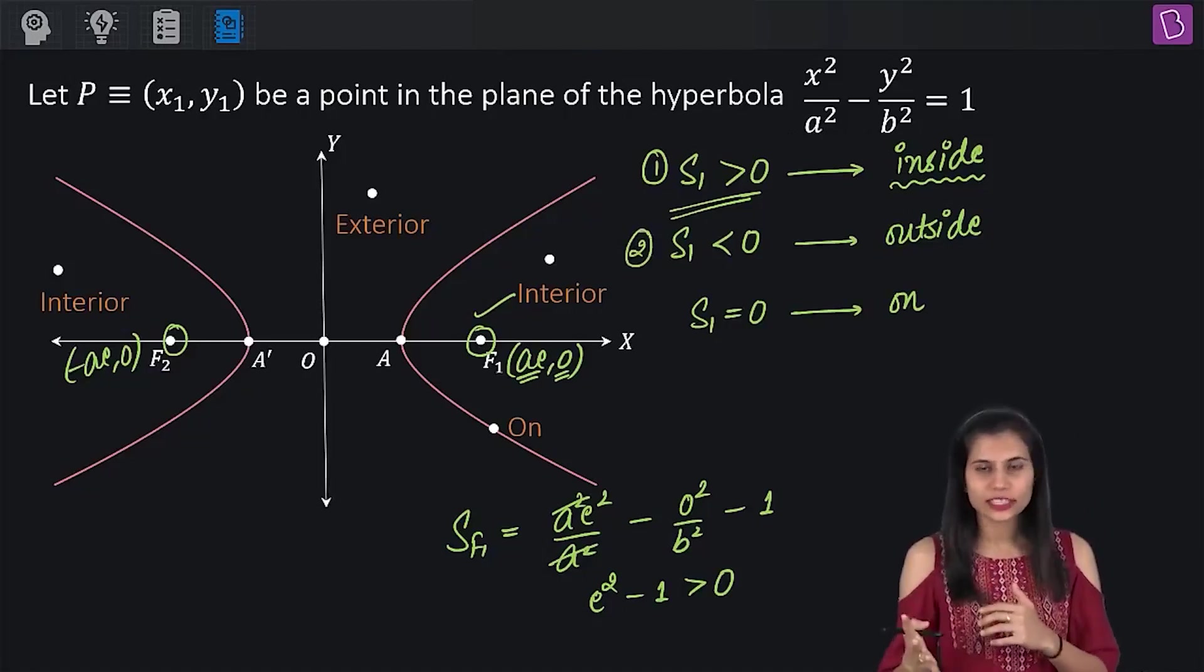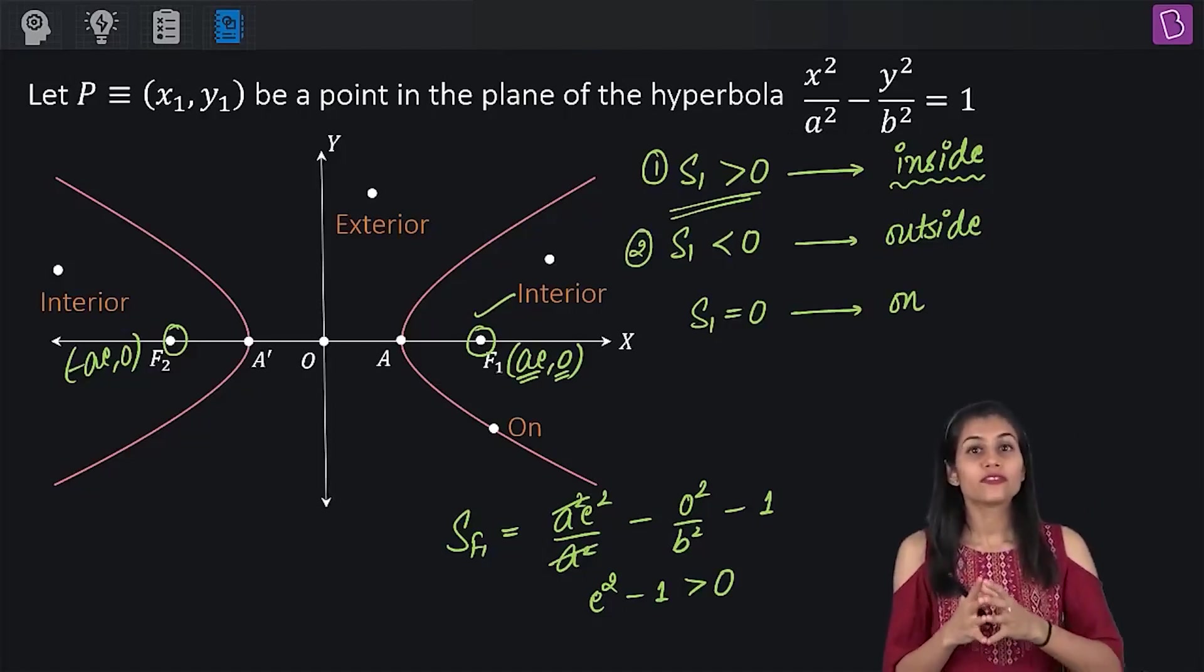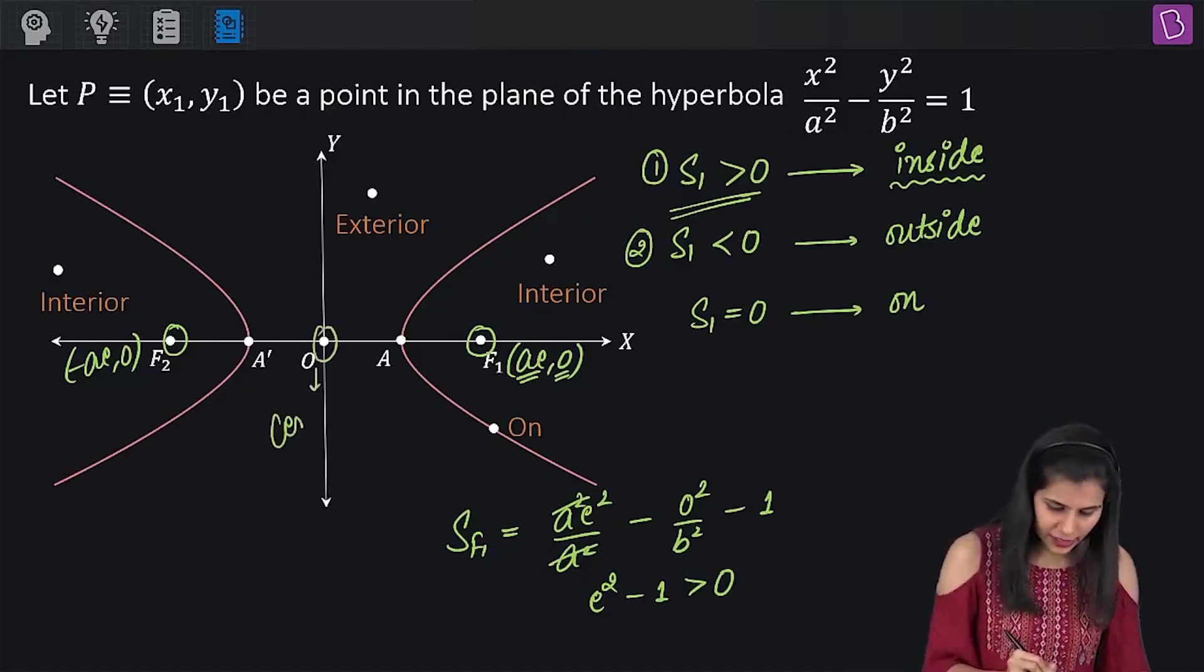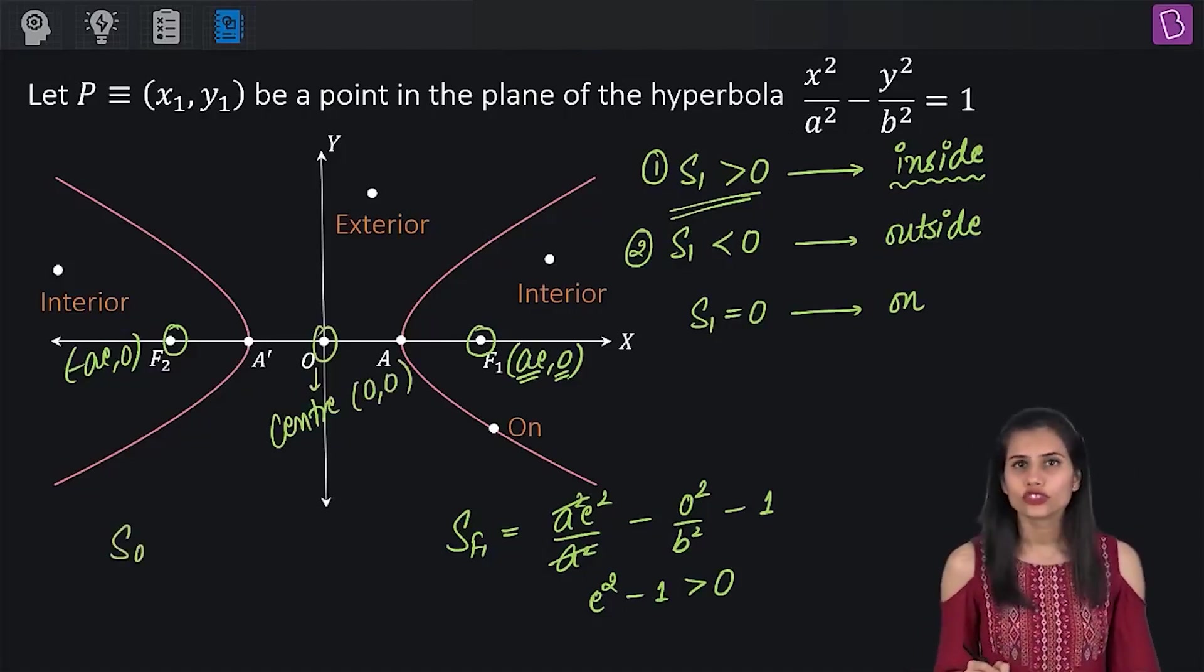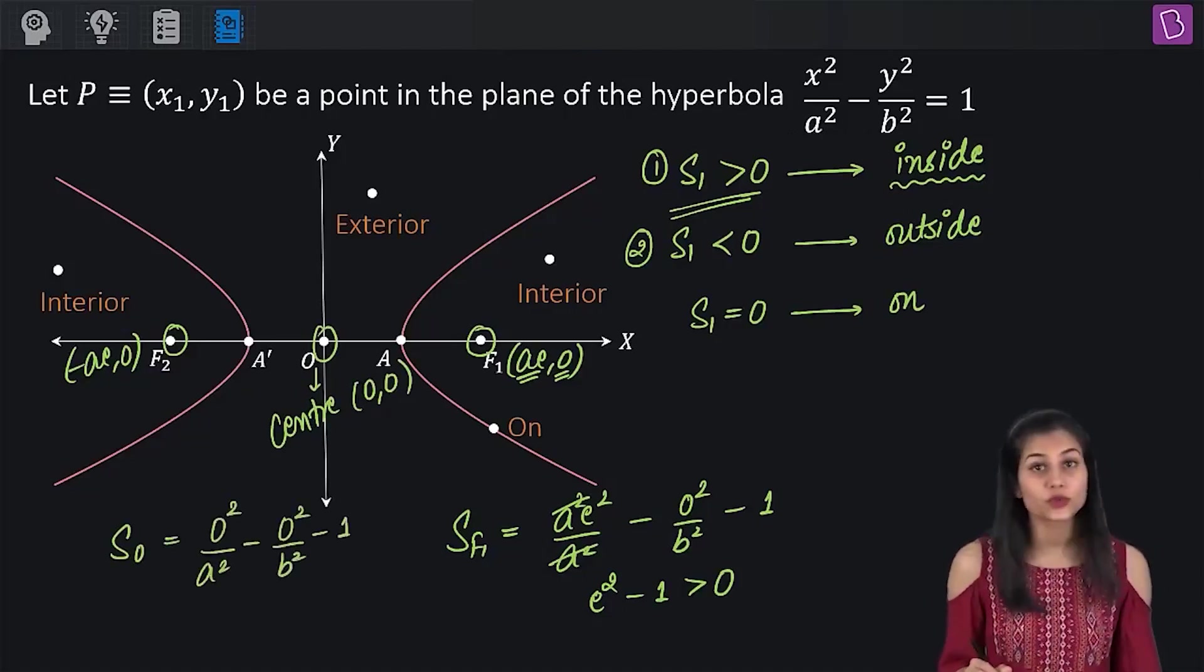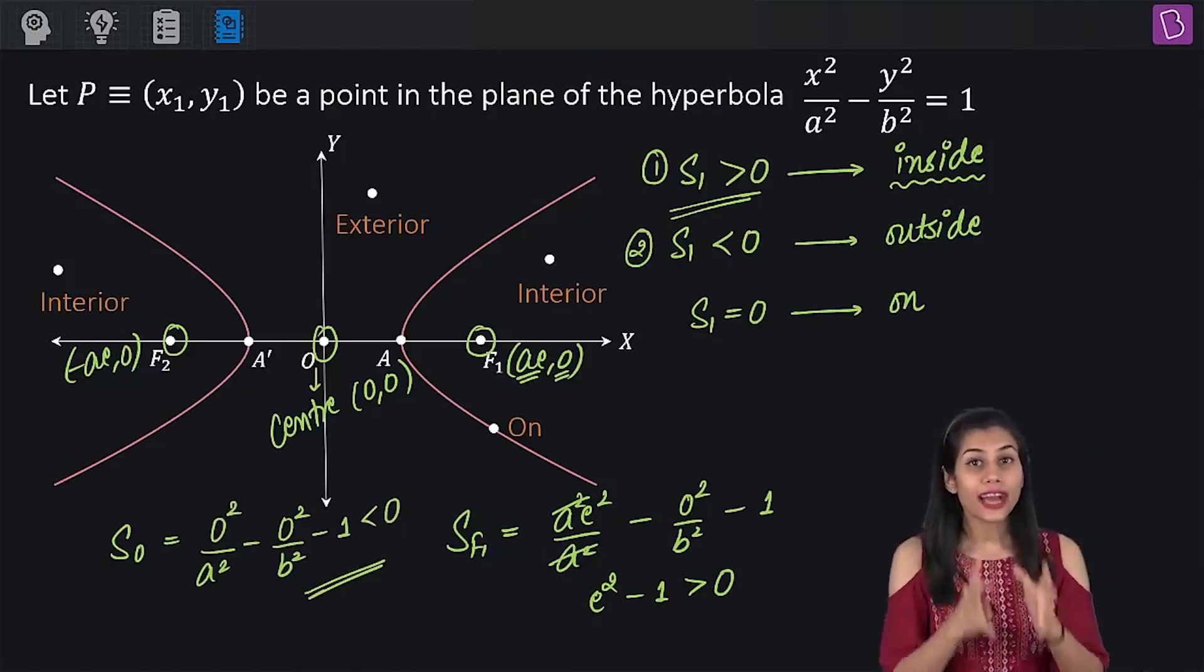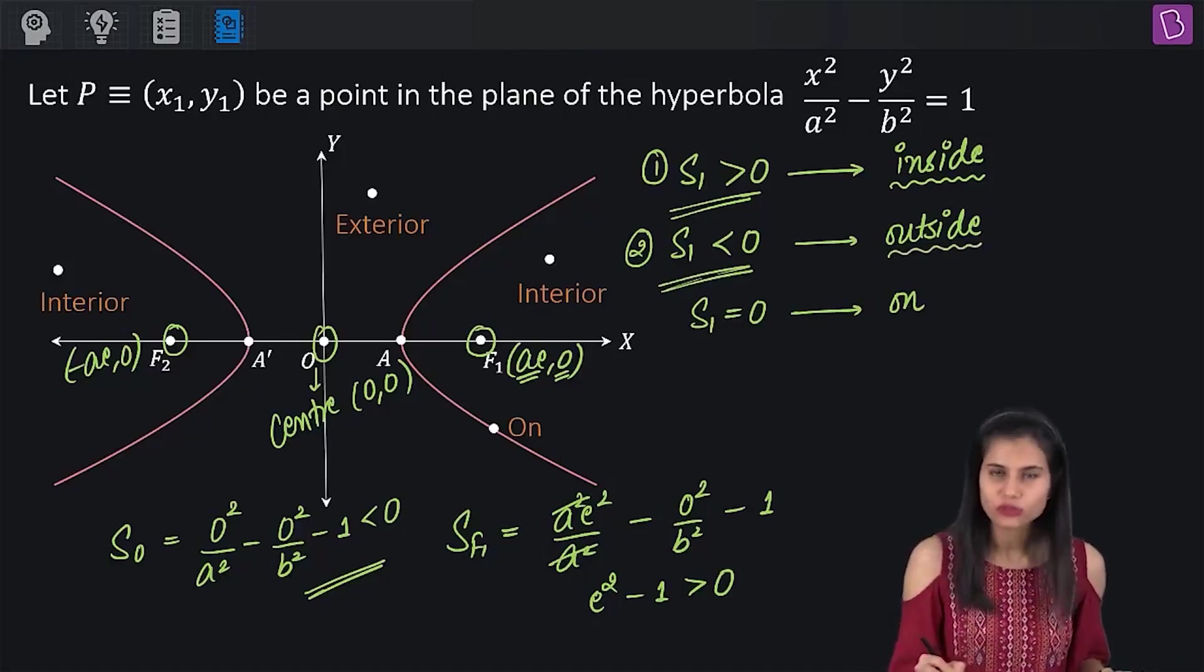Similarly, if you want to justify that S1 less than 0 is giving you outside region, for that, what you will do is, you will certainly want to show that the value of S at any exterior point is negative. For that, just catch hold of the very evidently visible exterior point which is your center having coordinates 0, 0. Now, find the value of S at origin which is your center, it will come out to be 0 square by a square minus 0 square by b square minus 1 which obviously as expected is negative. Because the value of S at an exterior point is coming out to be negative, you can definitely conclude that the value of S at any exterior point will be negative and hence, S1 less than 0 will obviously constitute the region sitting outside the hyperbola.